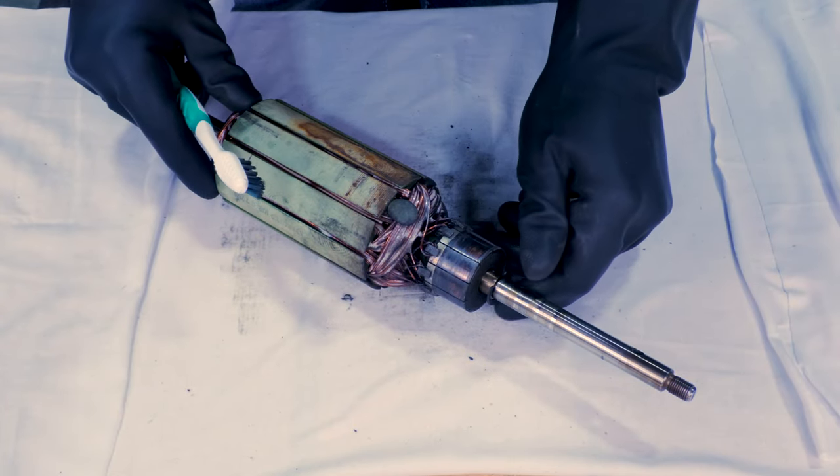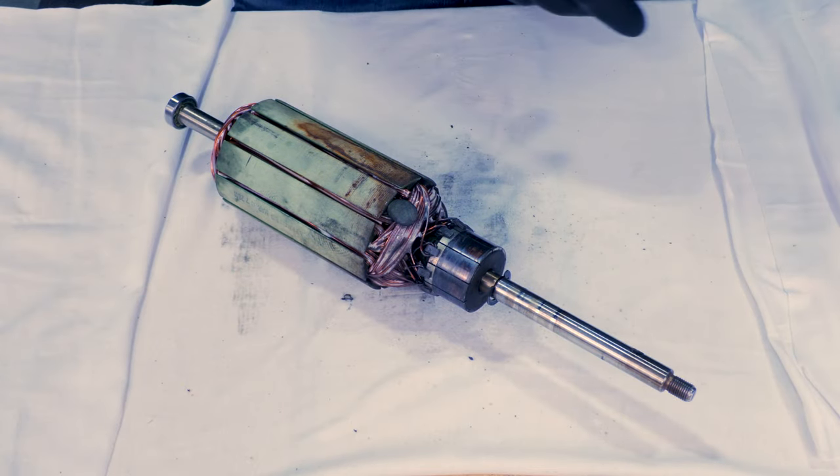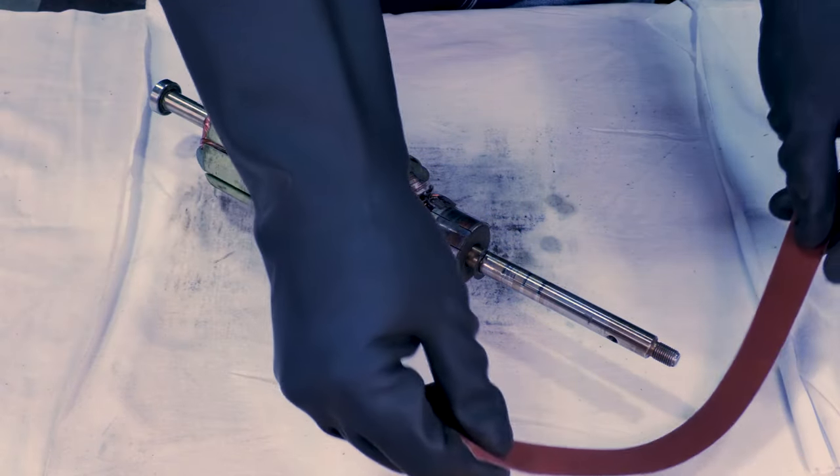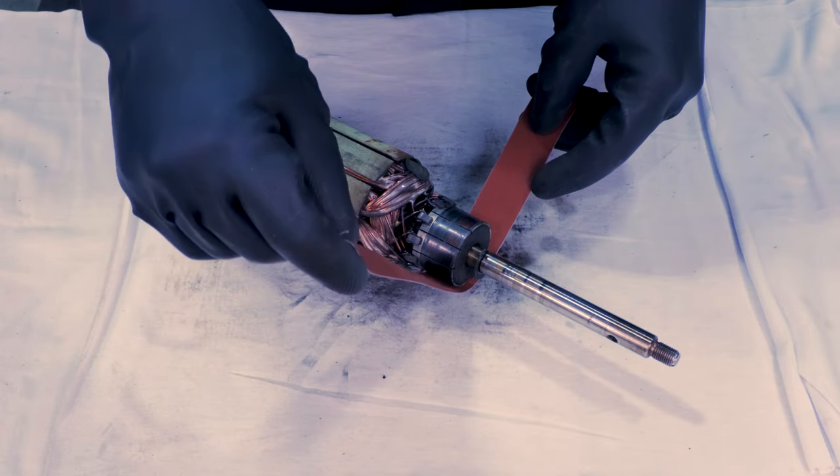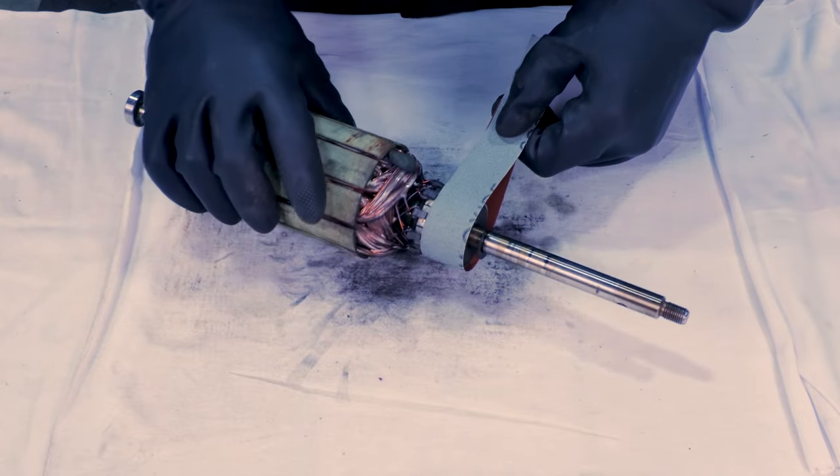This will remove any pitting, arc marks, or any remaining dirt and debris. For this, we'll be using 600 grit aluminum oxide sandpaper. While holding the armature in one hand, wrap the sandpaper around the commutator.